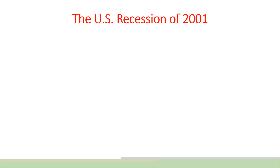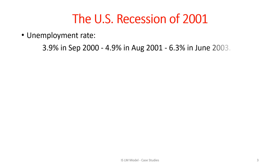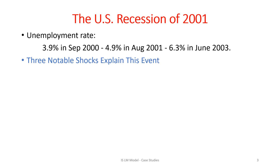In 2001, the US economy experienced a pronounced slowdown in economic activity. The unemployment rate that was at 3.9% in September 2000 rose to 4.9% in August 2001 and then further increased to 6.3% in June 2003. In many ways, the slowdown looked like a typical recession driven by a fall in aggregate demand. There are three notable shocks that explain this event.